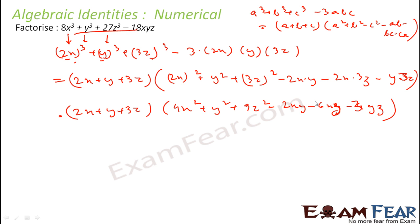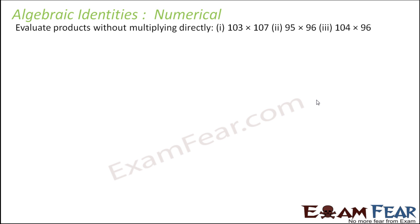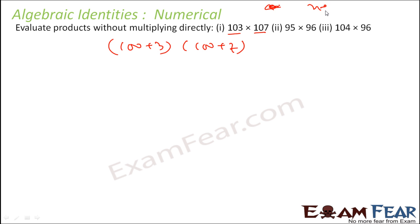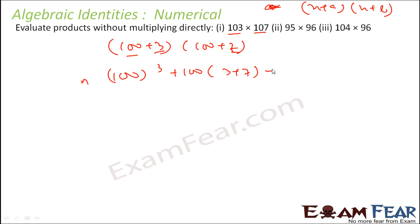Now we will try to evaluate expressions without multiplying directly. 103 × 107 can be written as (100 + 3)(100 + 7). We can use the identity (x + a)(x + b) = x² + x(a + b) + ab, where x = 100. This is nothing but 100² + 100×(3 + 7) + 3×7 = 10000 + 1000 + 21, which equals 11021.